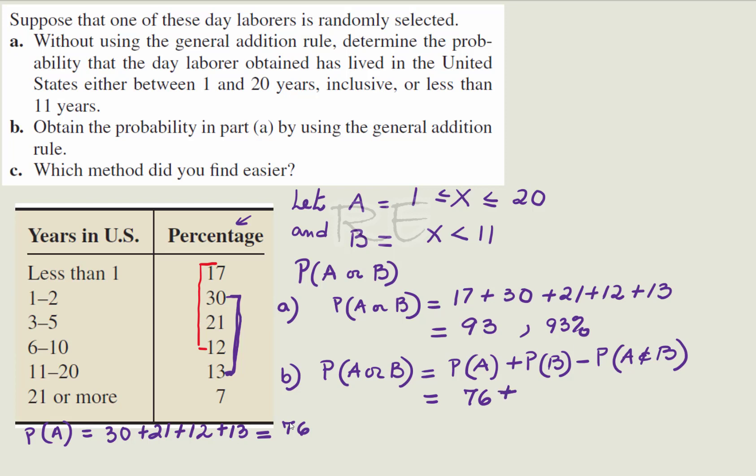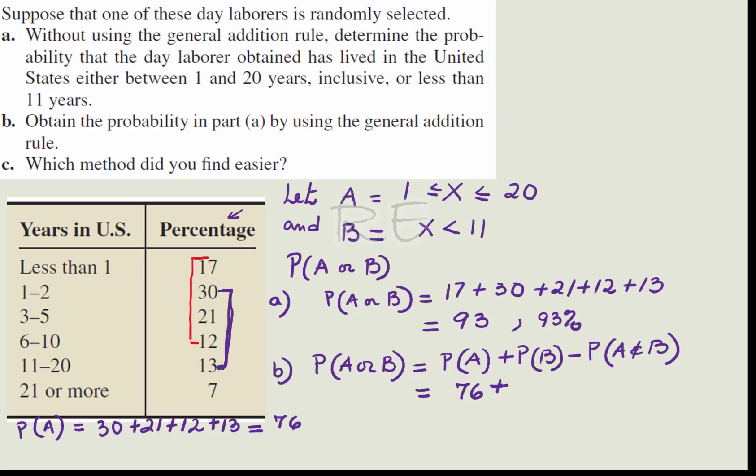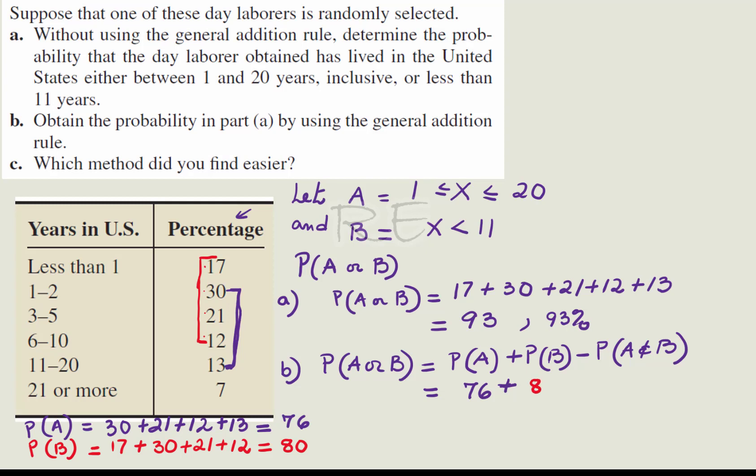For P of B, let's calculate it over here. P of B is equal to, we will start with 17 plus 30 plus 21 plus 12 and it's equal to 80.